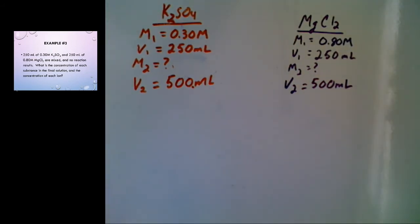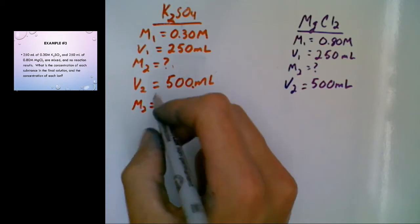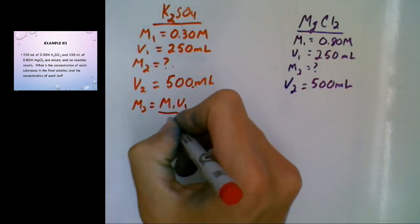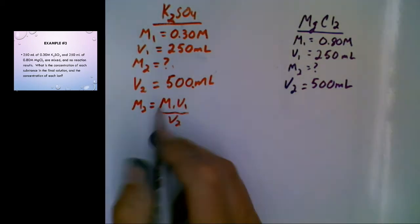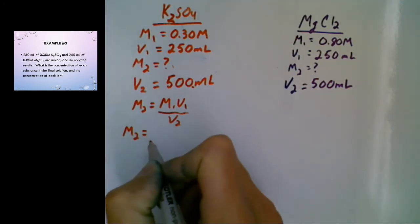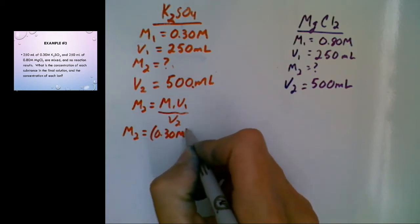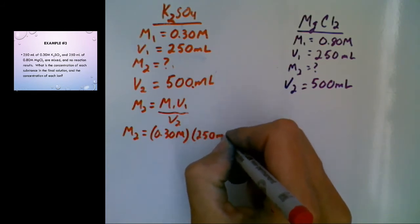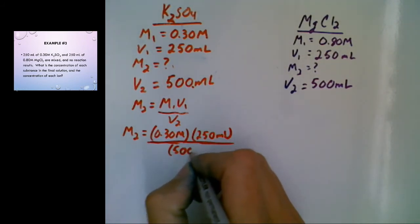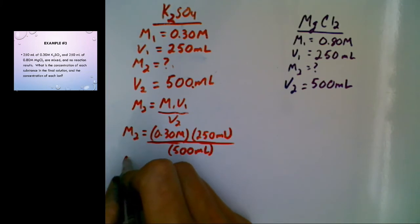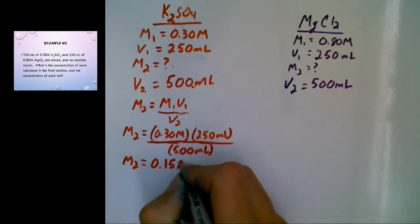So here's what we want to do. We want to do our dilution equation. M1 V1 equals M2 V2, and I'm going to rearrange it to solve for M2. So that means M1 multiplied by V1 divided by V2. So my final concentration here is going to be 0.30 molarity multiplied by 250 milliliters divided by 500 milliliters.